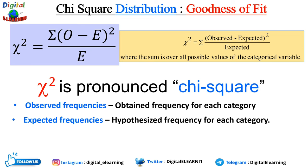Like all hypothesis tests, the chi-square goodness of fit test evaluates two hypotheses: the null and the alternate. The null hypothesis states that the population follows the specific distribution, and the alternate hypothesis states that the population does not follow the specific distribution.